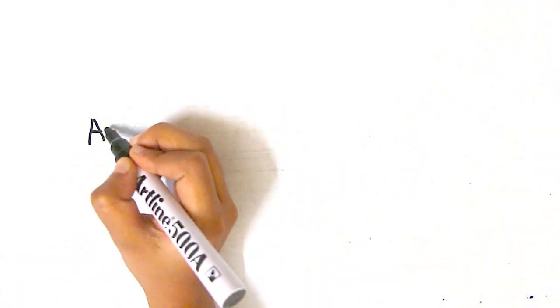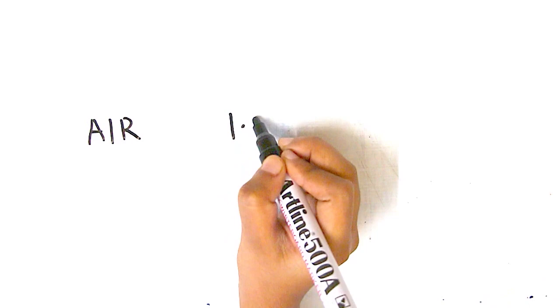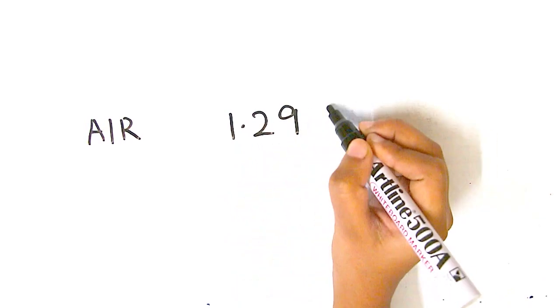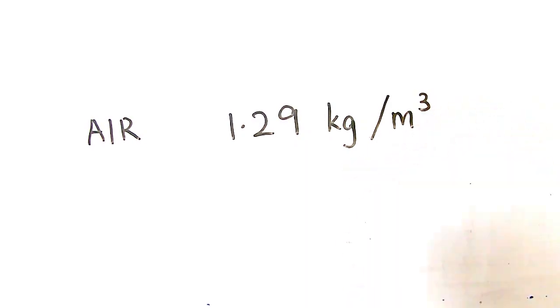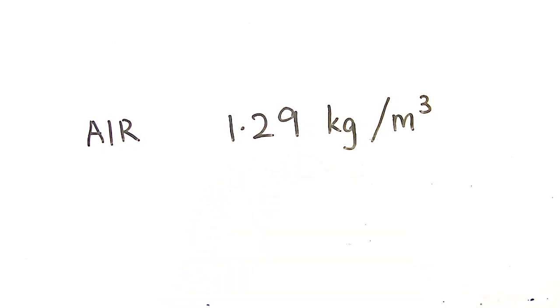Not just liquids — gases also have a density, using the same concept of mass in a unit volume. But gases have very small density numbers. For example, atmospheric air has a density of roughly 1.29 kilograms per meter cube. So 1 meter cube of air weighs only 1.29 kilograms.